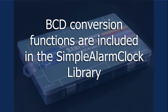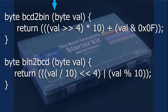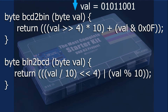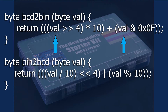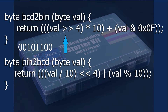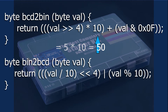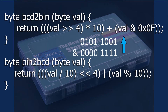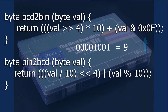These functions are included in the library rather than in the sketch and go something like this. The first function, BCD to binary, requires a BCD byte value as a passed parameter. Then the same value is used twice in the next line of code to create the normalized binary value. The first part takes the most significant nibble or the last four bits and shifts it right four bits, then multiplies that value by 10. The second part takes that original value and masks out the upper bits, leaving the one's place value behind. The two values are then added together and returned by the function.